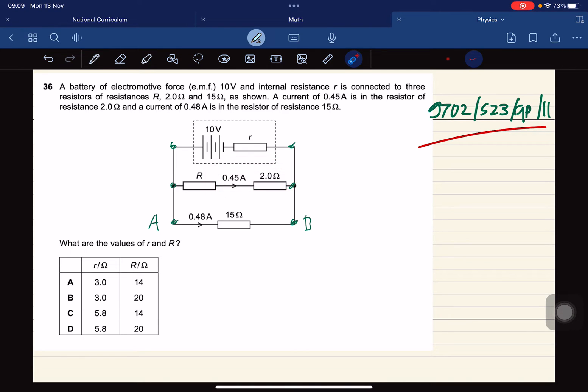Here and current 0.48 amperes in the resistor resistance 15.0 ohms here. So from this what are the value of r and R small r and R capital.